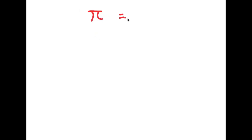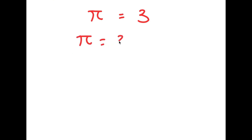In this video, I'm going to be proving that pi is equal to 3. As you probably already know, pi is an irrational number, meaning it doesn't have a whole number value — it's actually equal to 3.14159 and on forever. In this video, I'm going to be proving that pi is actually equal to 3 and not the irrational number that we all know it is.